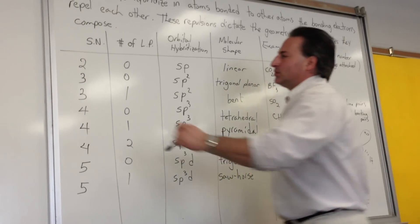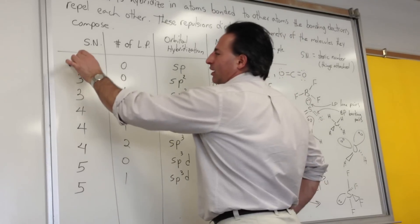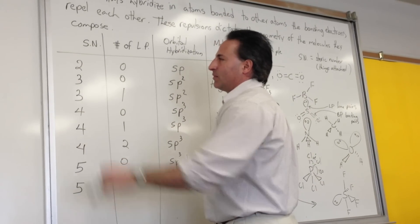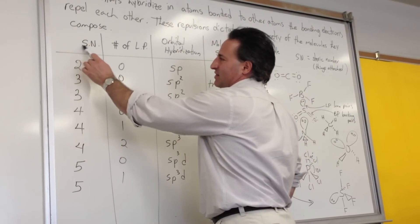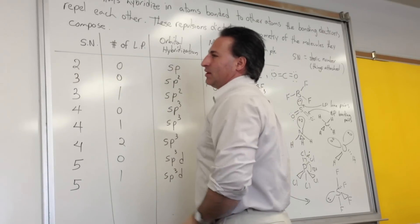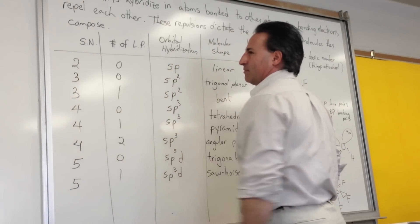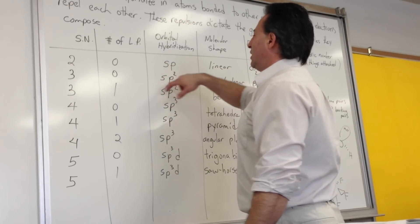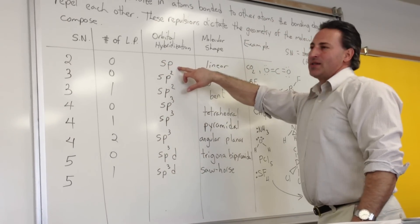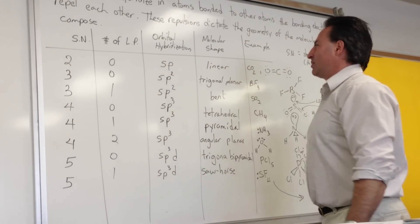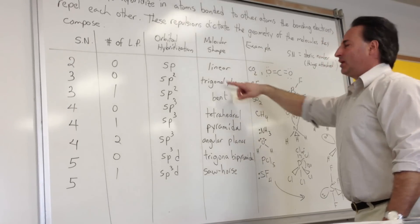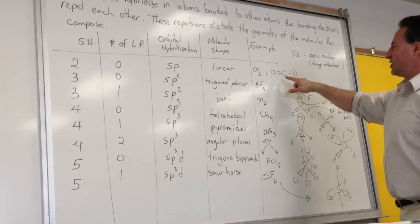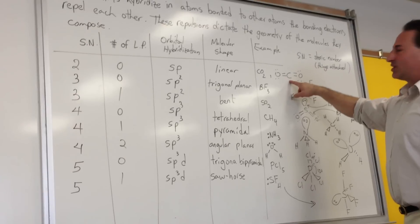If you have two things attached to a central atom — the steric number (SN) is two, with no lone pairs — then the central atom has to be SP hybridized, and it's going to be linear. Carbon in CO2 is an example of a molecule with that kind of hybridization.